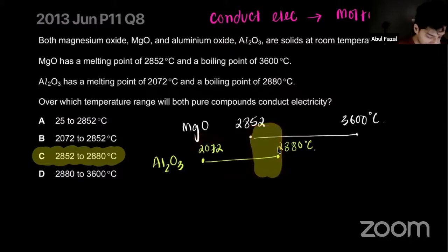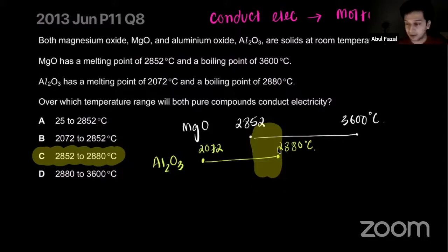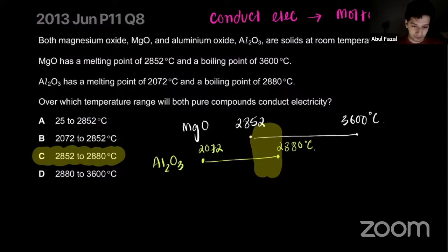With a diagram drawn out it makes a lot more sense, and that's why the answer is C — this range to this range. Do you get it? Thumbs up if you agree.